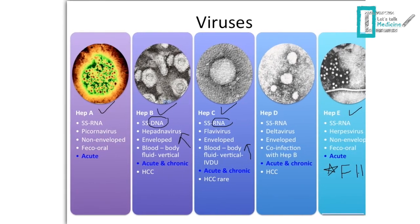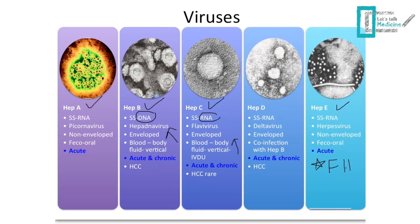Both hepatitis B and C can cause acute and chronic infection. Regarding hepatocellular carcinoma, remember that 80% of hepatocellular carcinoma patients are infected with hepatitis B virus, making it more common than with hepatitis C. For hepatitis D, it is an RNA virus that requires the hepatitis B surface antigen in order to infect and replicate in the host cell. It is enveloped, from the delta virus family, and can lead to both acute and chronic infection and hepatocellular carcinoma.